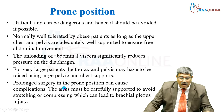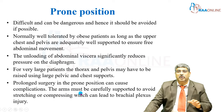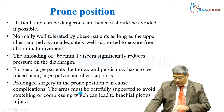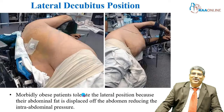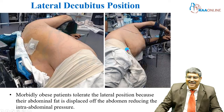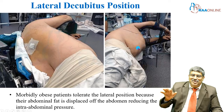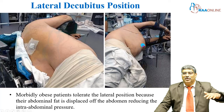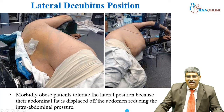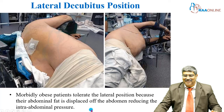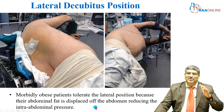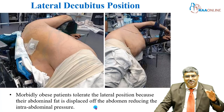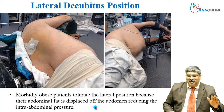For very large patients, the thorax and pelvis have to be raised using large pelvic and chest supports. Prolonged surgery in the prone position can cause complications, and the arms must be carefully supported to avoid brachial plexus injury. For lateral decubital position — done when prone is not possible — the abdominal fat is displaced away from the abdomen, reducing abdominal pressure, and patients usually tolerate this position very well.